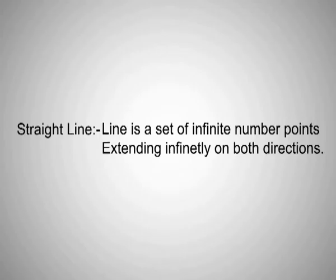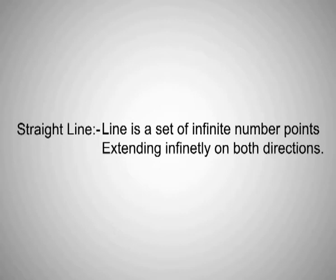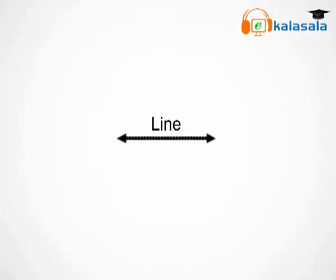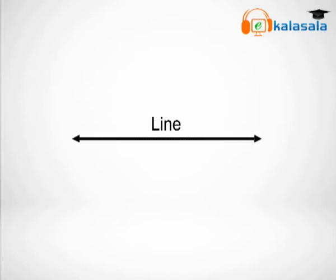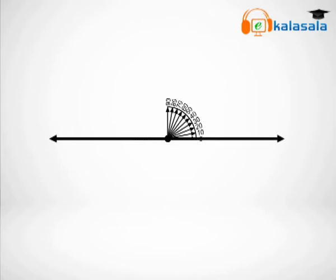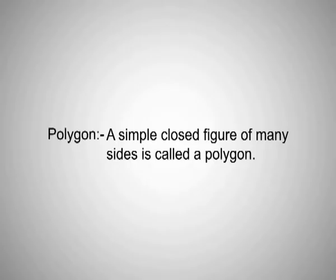The next definition is straight line. A straight line is nothing but a set of infinite number of points extending infinitely in both directions. If you observe carefully, a straight line contains 180 degrees — it is also called a linear angle.